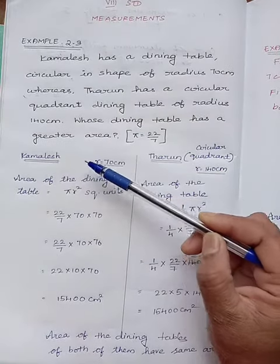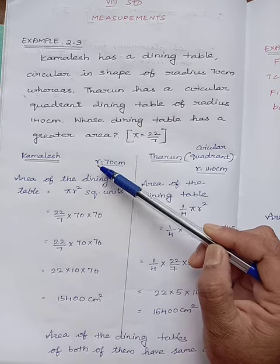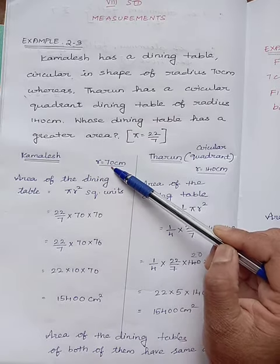So Kamalesh dining table, it is circular in shape, the radius is given as 70 cm.